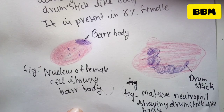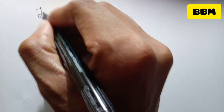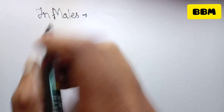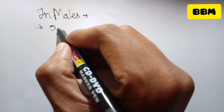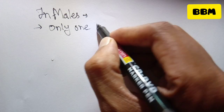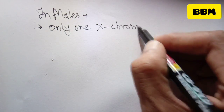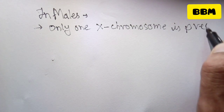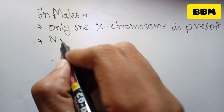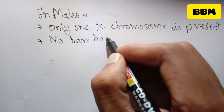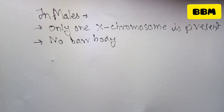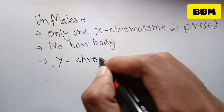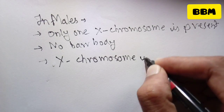In males, only one X chromosome is present, so there is no Barr body. The Y chromosome is responsible for male sex.